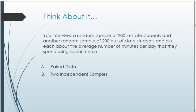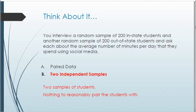Second question: you interview a random sample of 200 in-state students and another random sample of 200 out-of-state students, asking about average minutes per day spent on social media. Is this paired or two independent samples? This is two independent samples. There is no way any observation from one group is matched with any observation from another group — no in-state student is paired with a specific out-of-state student, so they're independent.